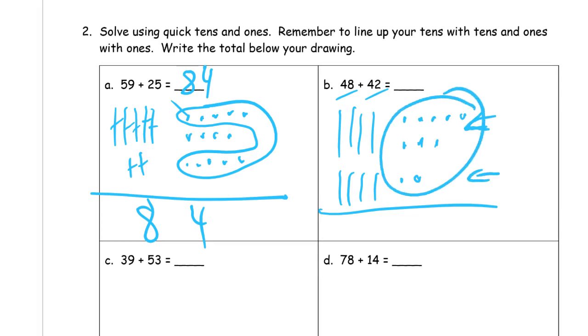So once I count this as a ten, I don't have any ones at all — zero. And the tens are one, two, three, four, five, six, seven, eight, nine — 90.